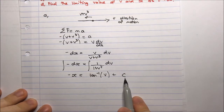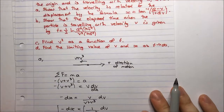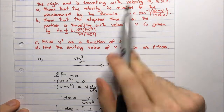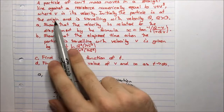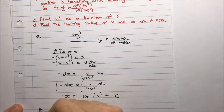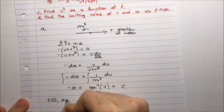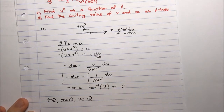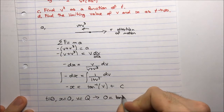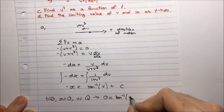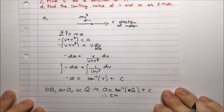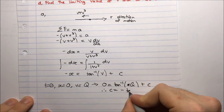We need to determine the constant using initial conditions. Initially the particle is at the origin travelling with velocity q, so when t equals 0, x equals 0 and v equals q. Substituting in: 0 equals arctan(q) plus c, therefore c equals negative arctan(q).